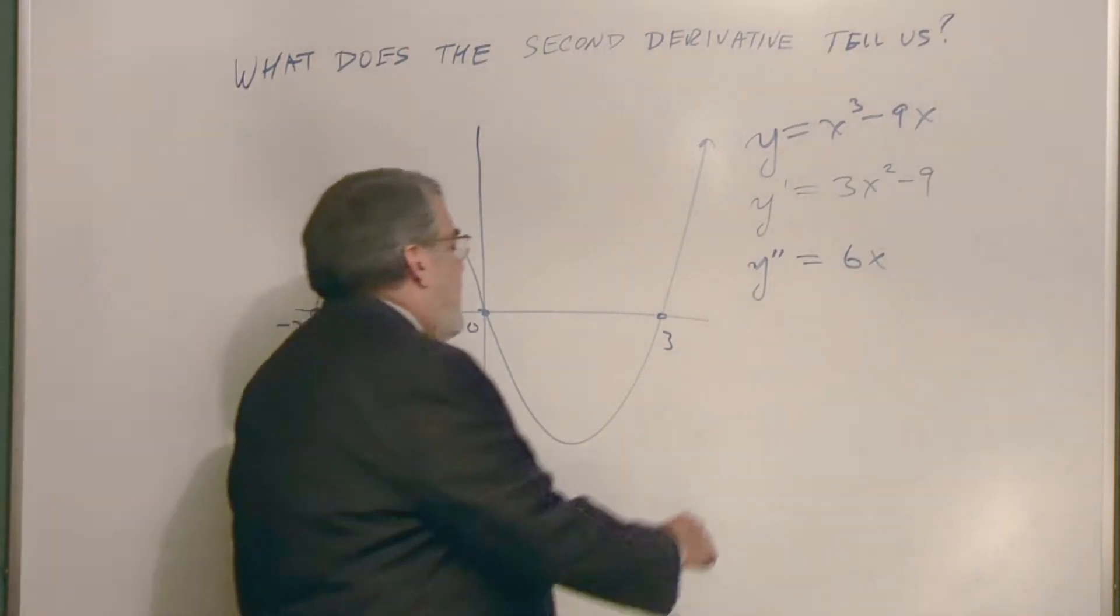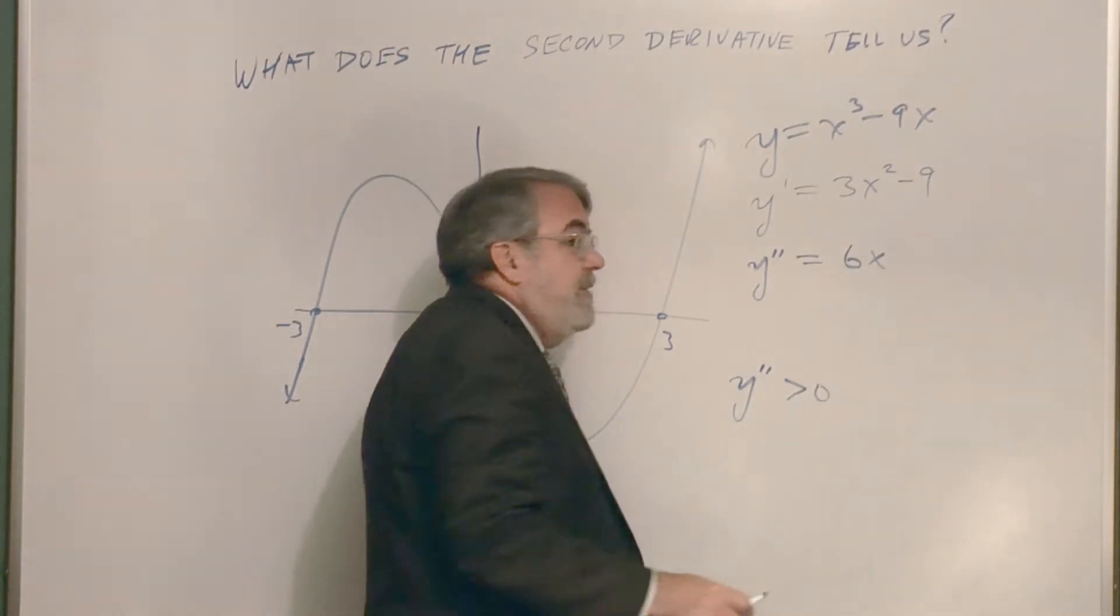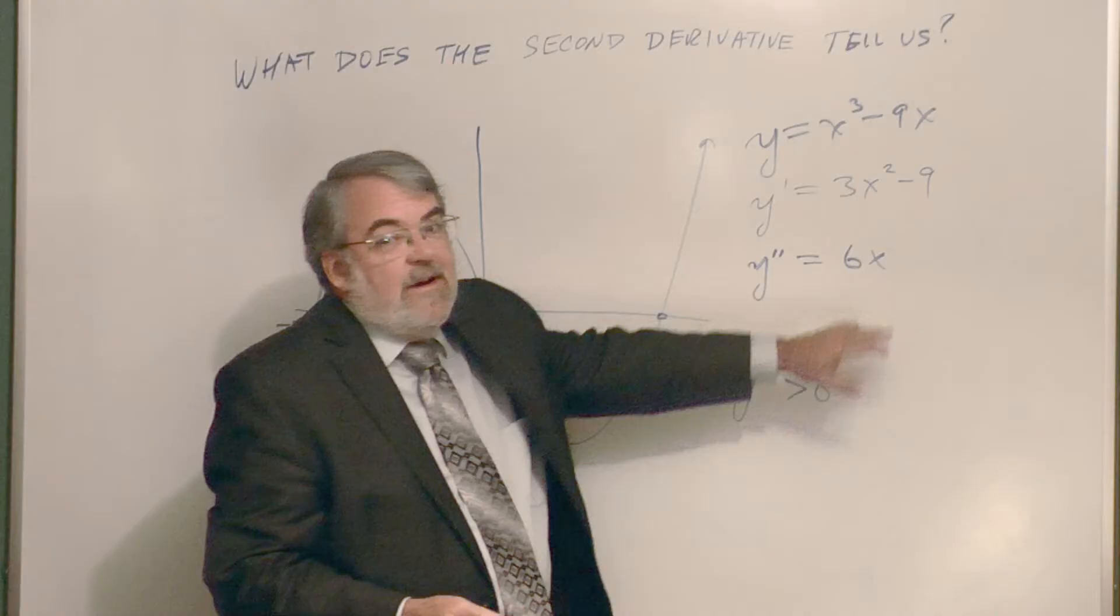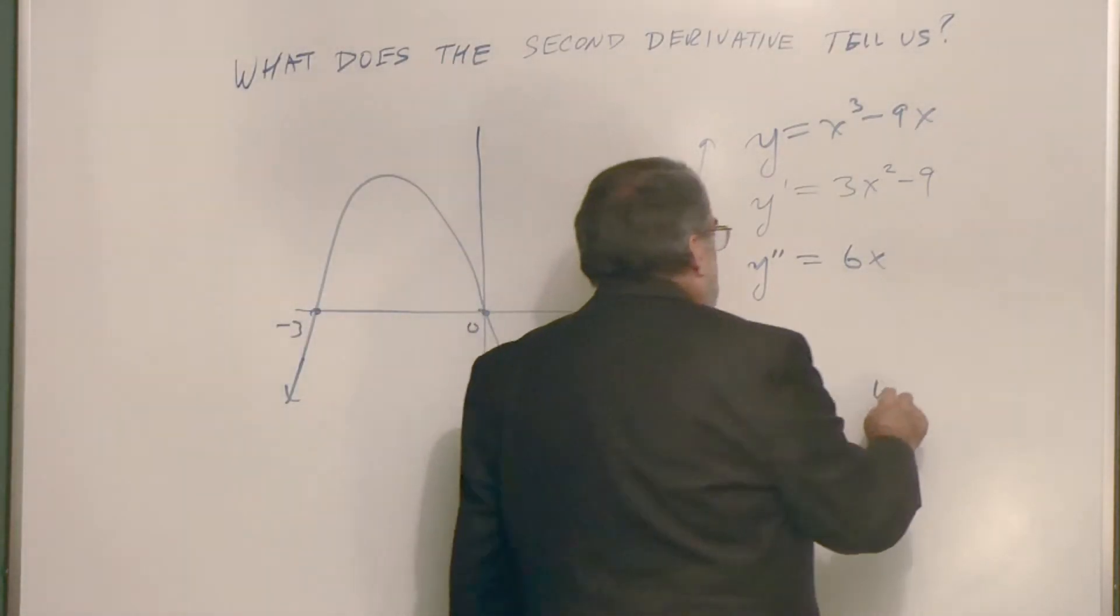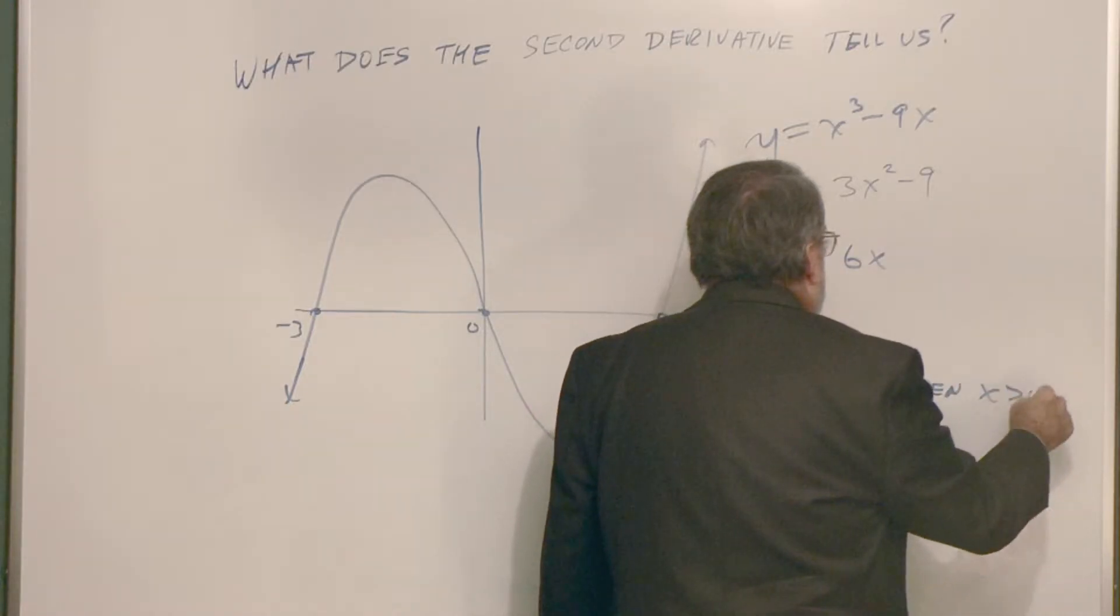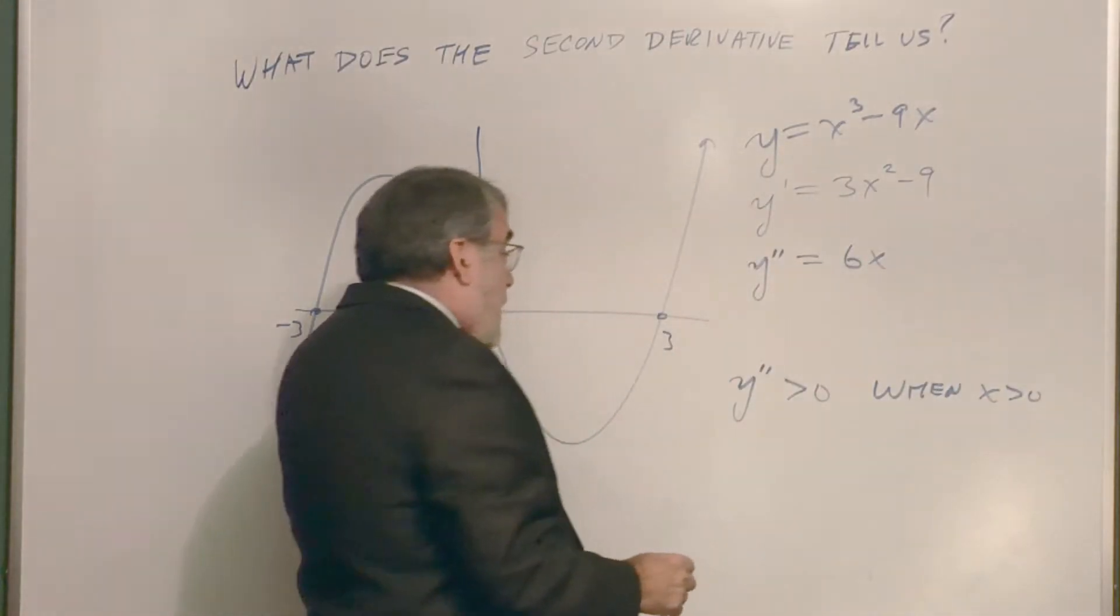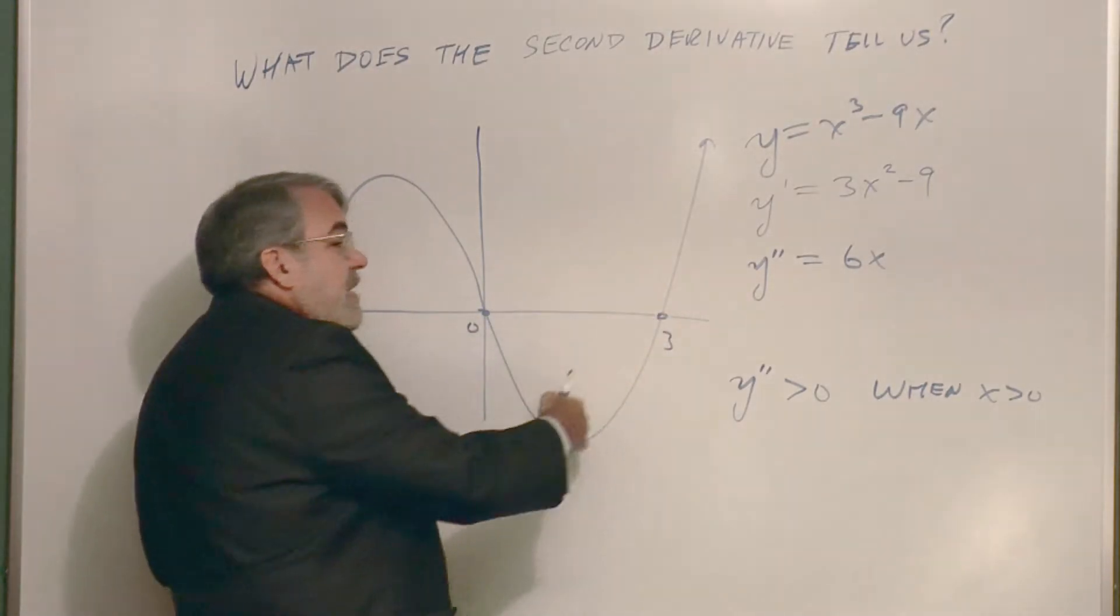And the second derivative is going to be positive whenever 6 times x is positive. In other words, when x is positive. When x is greater than zero. And in fact, when x is greater than zero, look what we have. We have the concave up shape. Concave up.